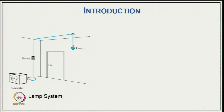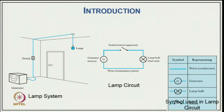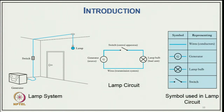A typical example is a generator connected through a switch to a lamp as a load unit. Several symbols represent different components of an electrical system: wires/conductors, a circle with 'G' for generator, a circle with a cross for a lamp or bulb, and a bar between two points for a switch. These are the symbols used in electrical circuit diagrams.